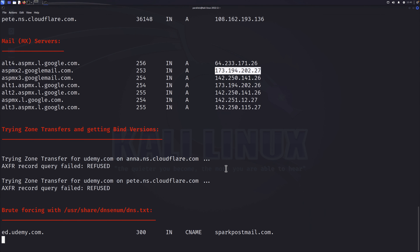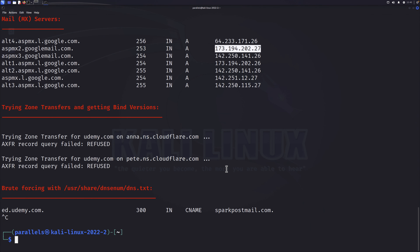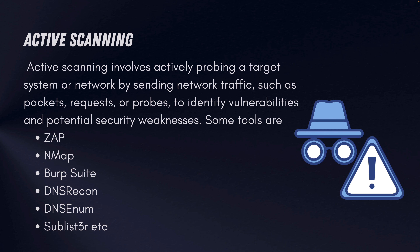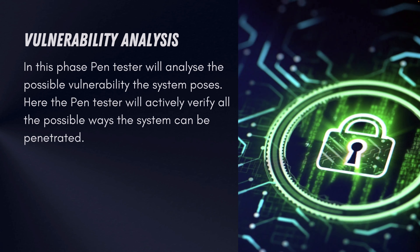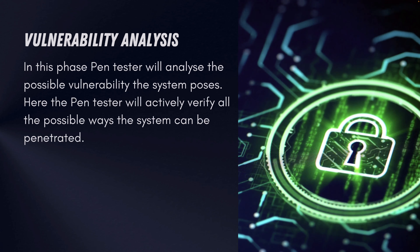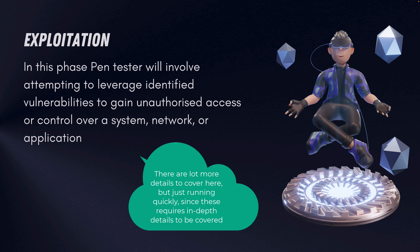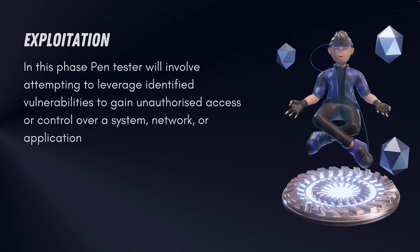So that's the idea of how you can do reconnaissance using active scanning in penetration testing. The next phase is vulnerability analysis, where the penetration tester analyzes possible vulnerabilities the system poses and actively verifies all the ways the system can be penetrated. After that comes the exploitation phase, where the penetration tester attempts to leverage identified vulnerabilities to gain unauthorized access or control over a system, network, or application — simulating exactly what a threat actor would do.